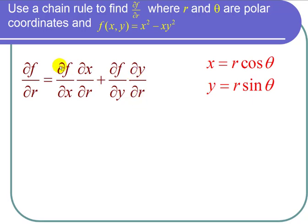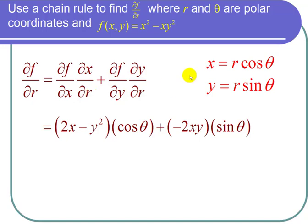Now I compute the partial derivatives. ∂f/∂x = 2x - y². ∂x/∂r is the partial derivative with respect to r for r cos θ, which is just cos θ. ∂f/∂y = -2xy and ∂y/∂r = sin θ.